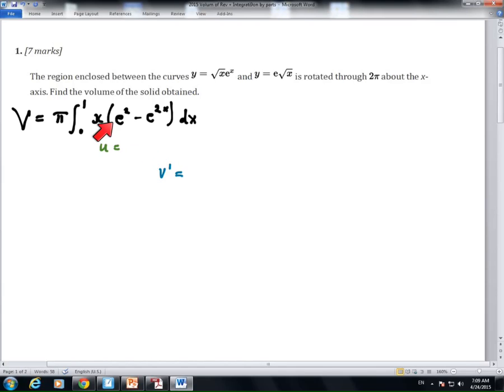The first candidate I use for u is any power of x that will be reduced by differentiation. That's why I choose this. And then, getting the u prime is simple, and then getting the v prime up to v,